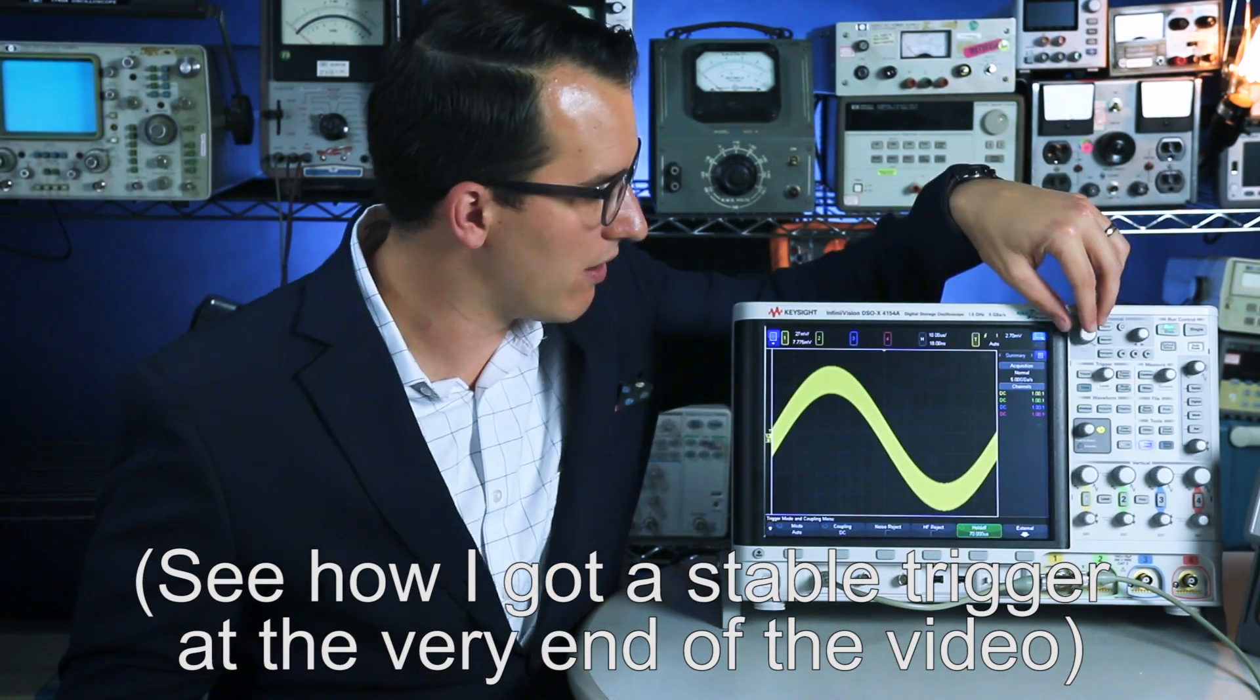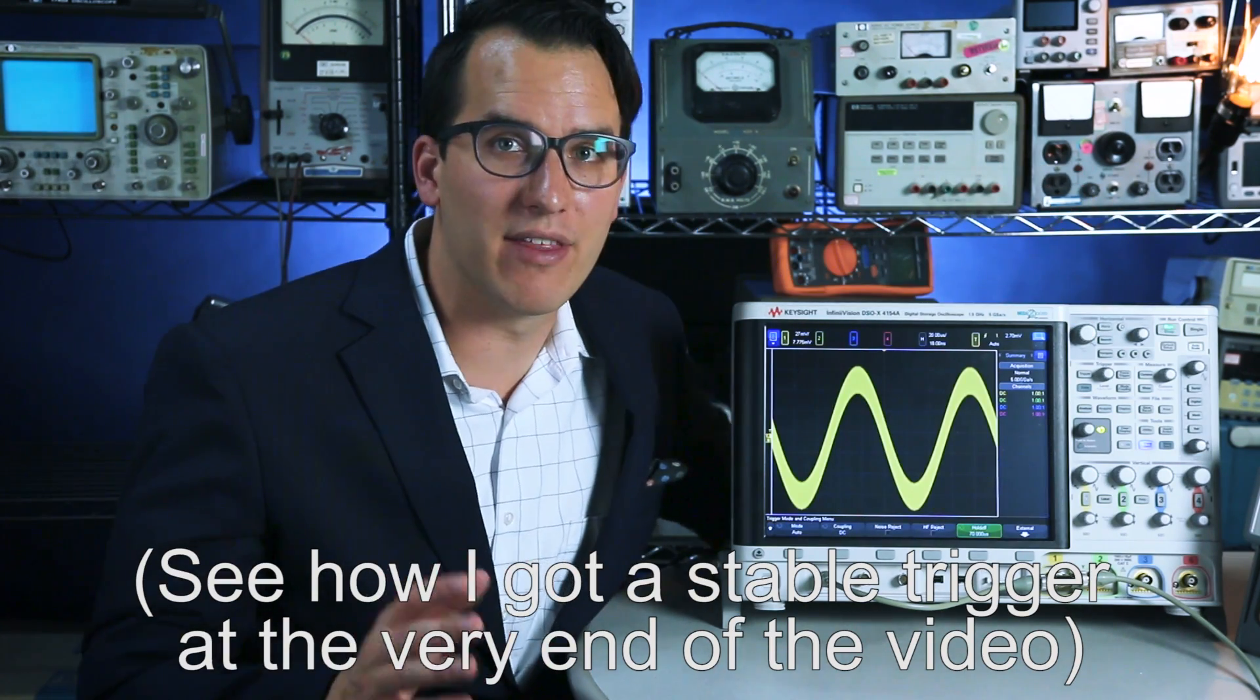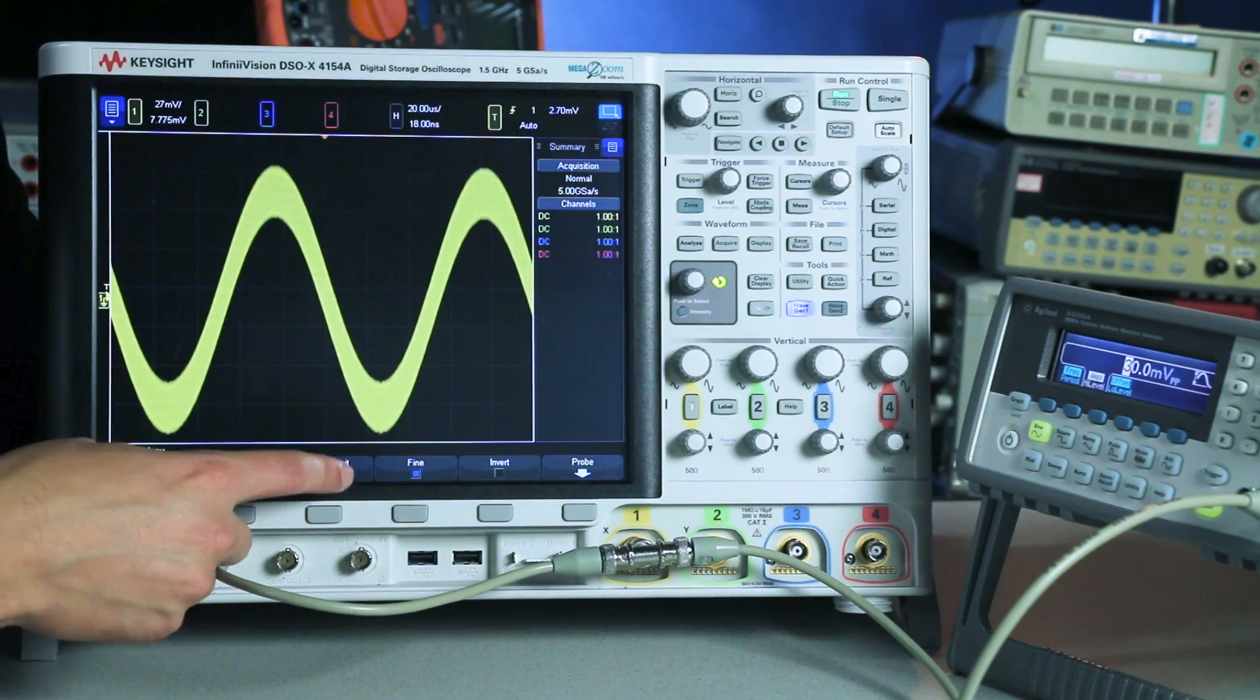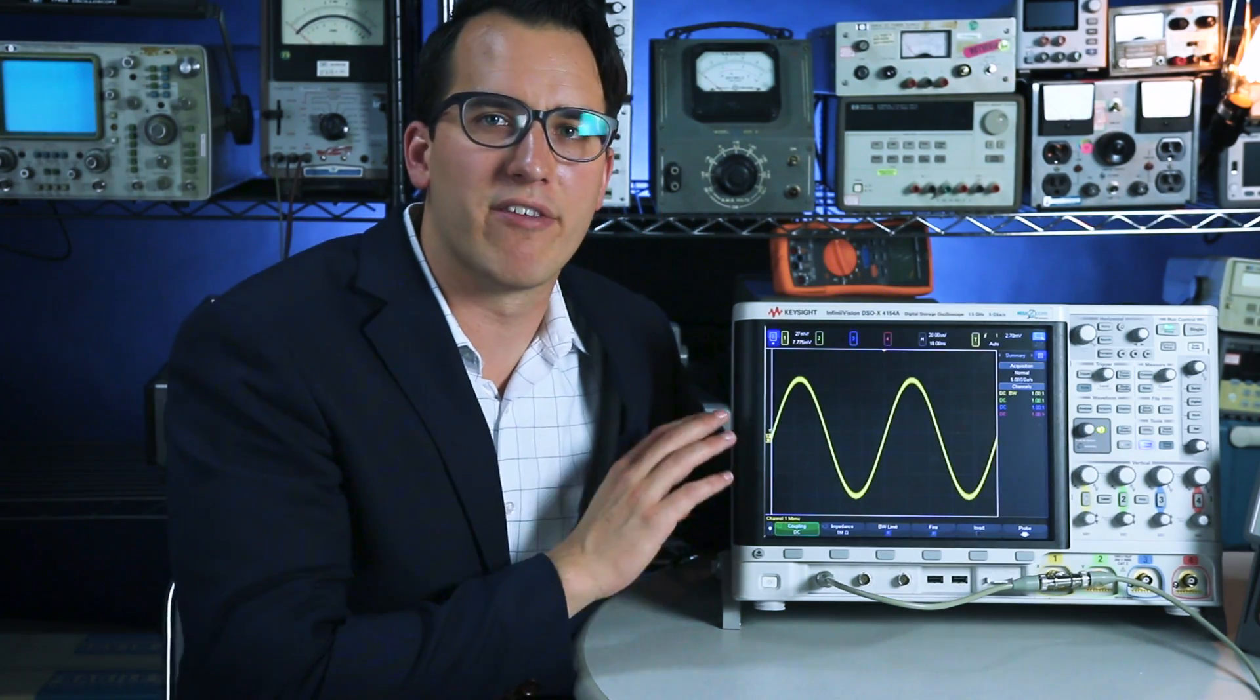So now that I have a stable trigger, let's zoom out a little bit and turn on bandwidth limiting. To turn on bandwidth limiting, I'm going to select the channel and I'm just going to turn on the bandwidth limit and I've now put in a 20 megahertz bandwidth limit on this signal.